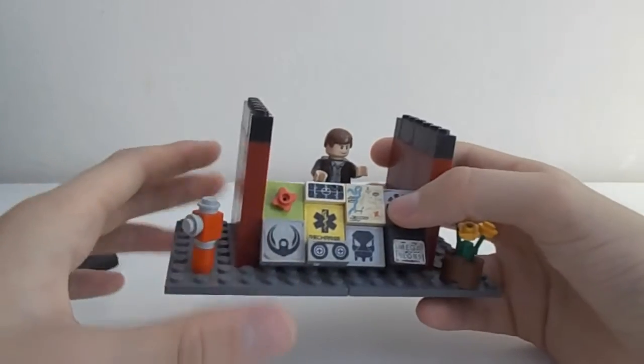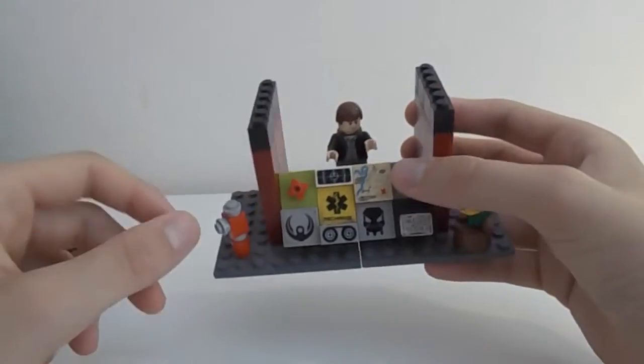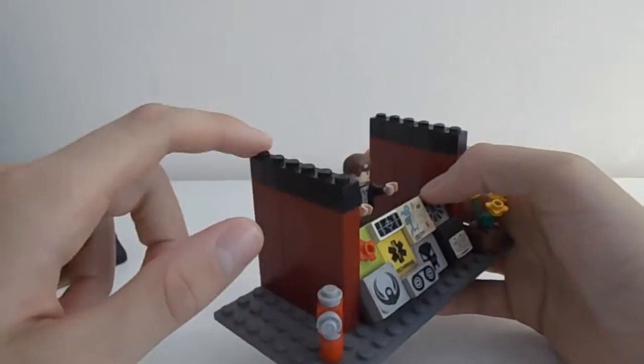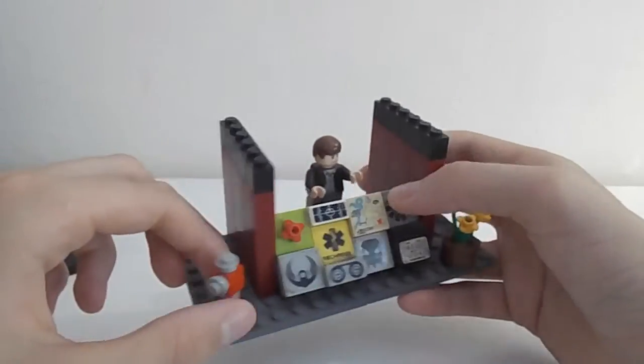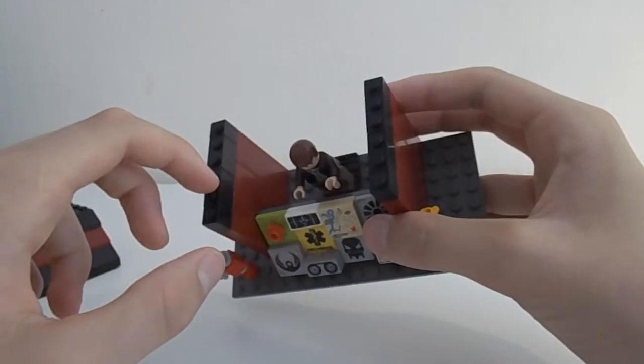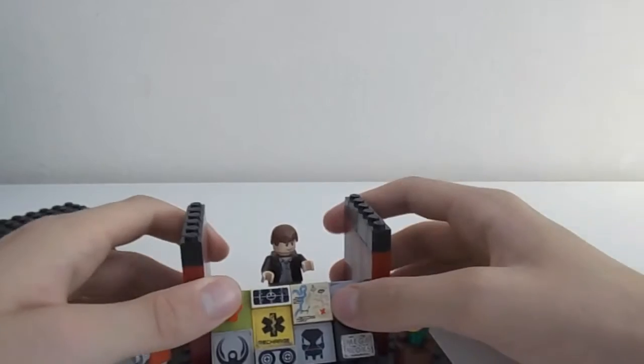And for the walls, normal bricks - this one-by-one or this one-by-two, one-by-one. Just one-by-one and one-by-two bricks. So it's simple.